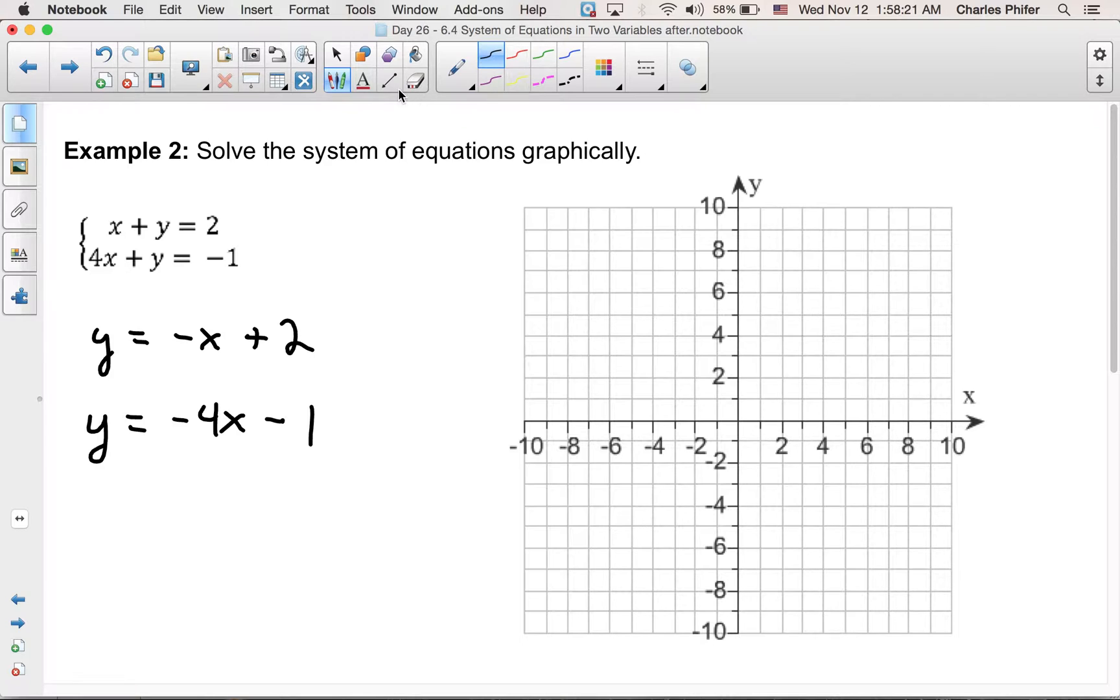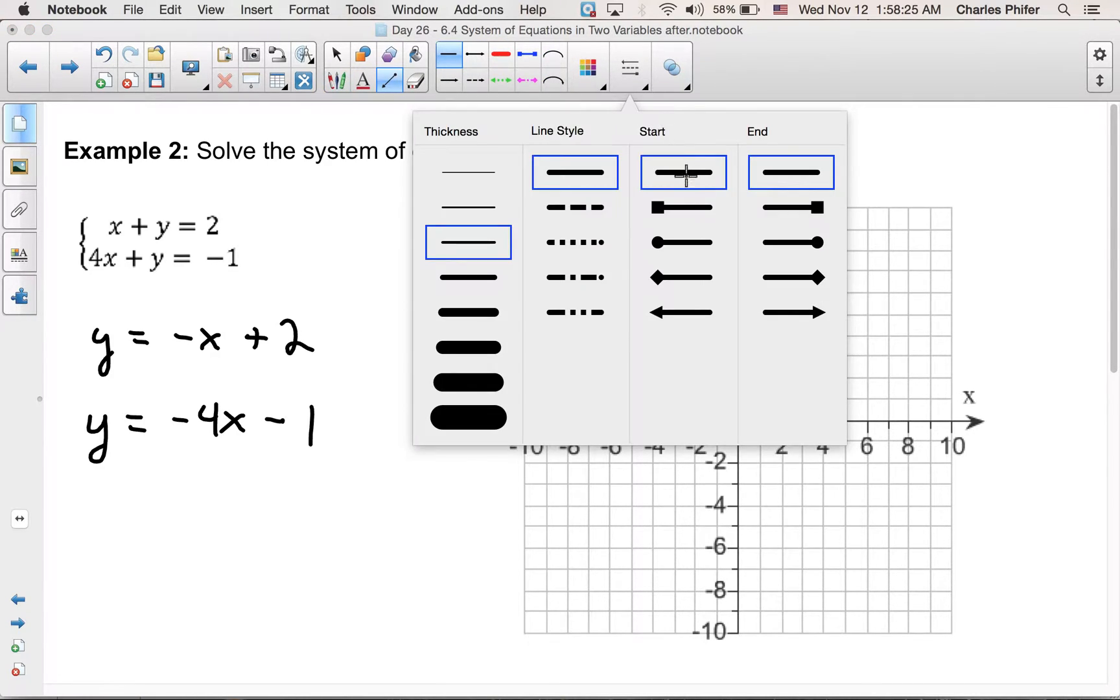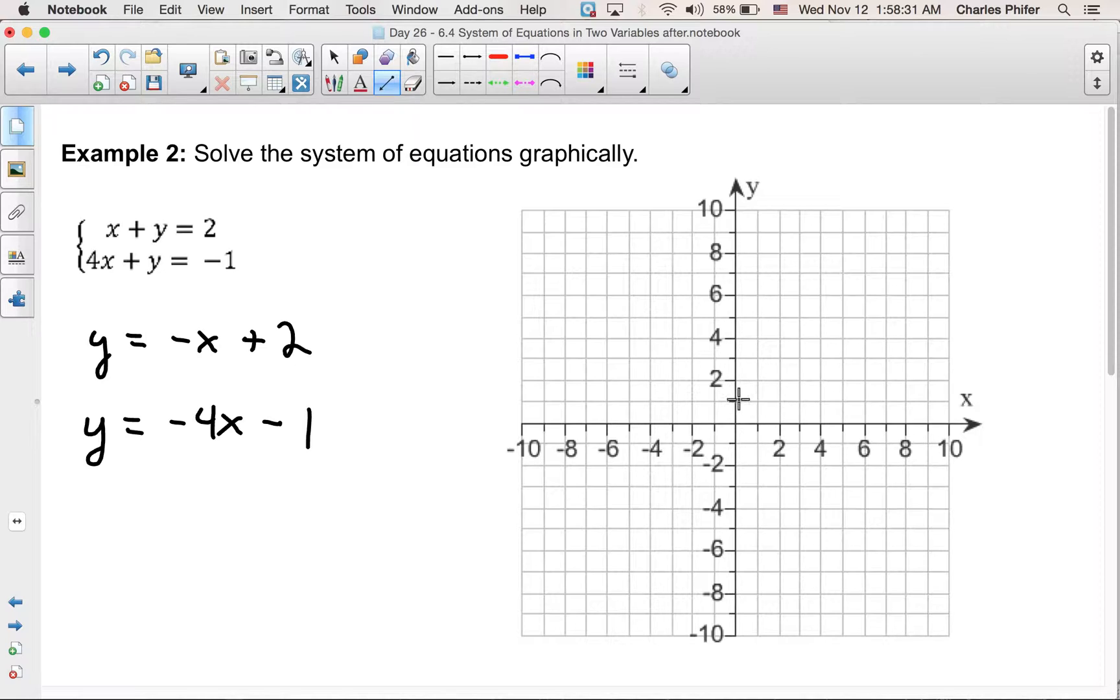For graphing this, we start at 2 and we have a slope of negative 1. So we go down 1 over 1, down 1 over 1. If we extend it, we get something like this. And then I need to go in the other direction as well.